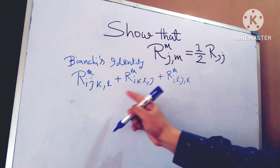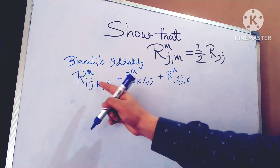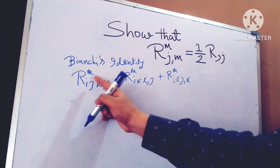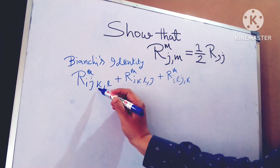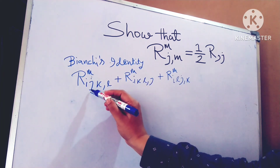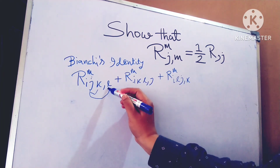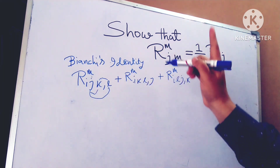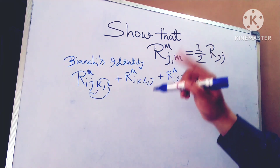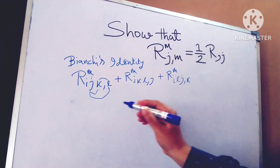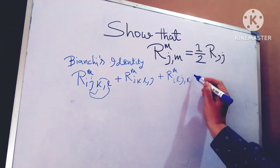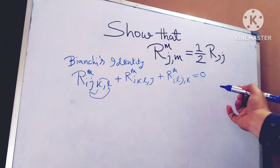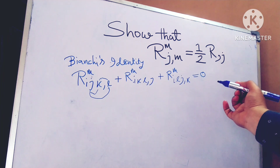The indices J, K, L are cyclically permuted — J, K, L just move positions, so K is placed here, J is placed here, and L is placed here. This cyclic movement gives us the full identity, which equals zero. I hope that is clear.